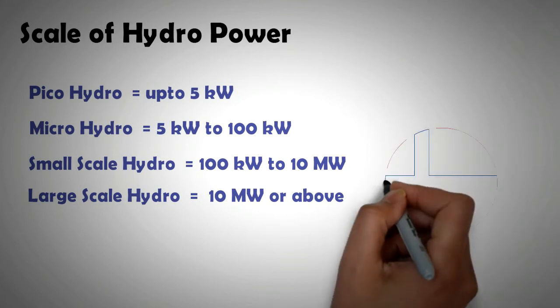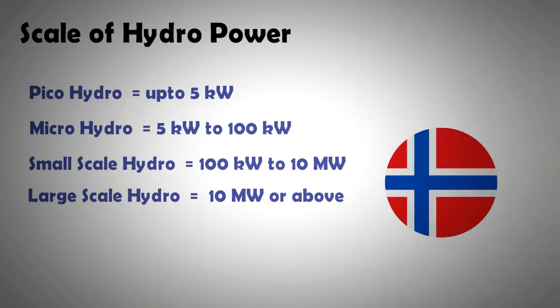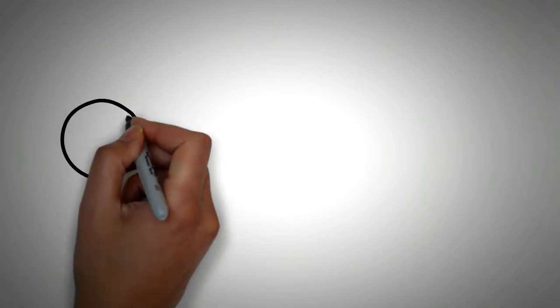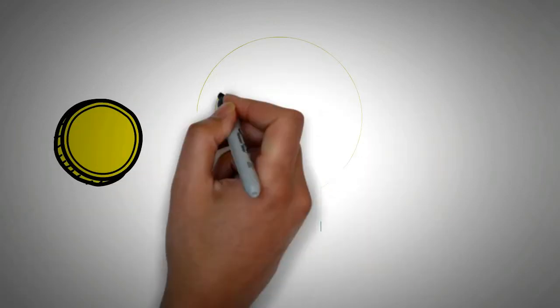There are many countries that are heavily reliant on hydropower. For example, Norway gets more than 98 percent of its energy through hydropower. Even to this day, hydropower is one of the cheapest modes of electricity generation.